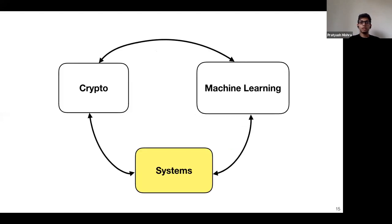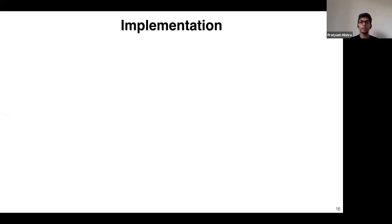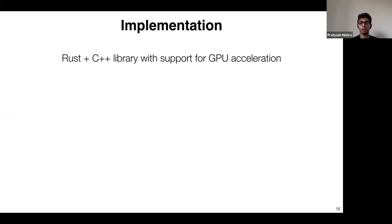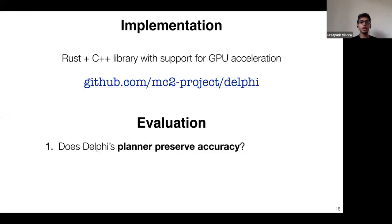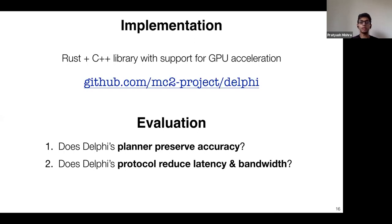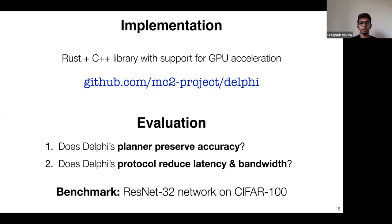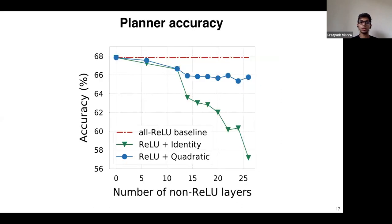Does Delphi actually lead to practical improvements on concrete networks? This is where systems techniques come in. We implemented Delphi as a Rust and C++ library with GPU support, available on GitHub. We evaluated performance along two dimensions: first, does Delphi's planner actually preserve accuracy? Second, does Delphi's protocol reduce latency and bandwidth? Our evaluation is over the ResNet-32 network, which is deeper than any network considered in the literature at that point, on CIFAR-10 at 10% difficulty.